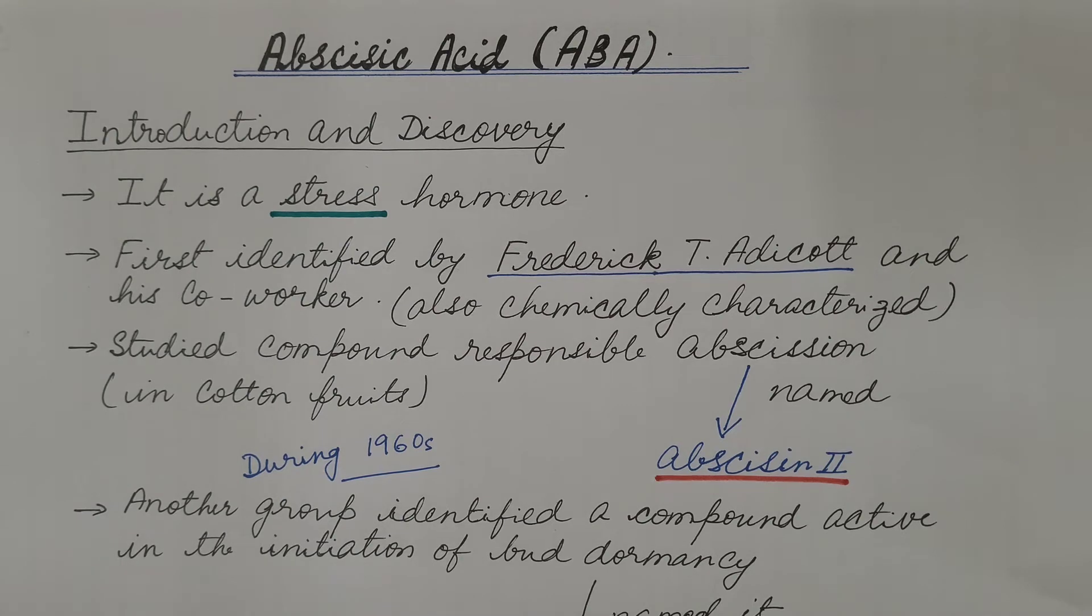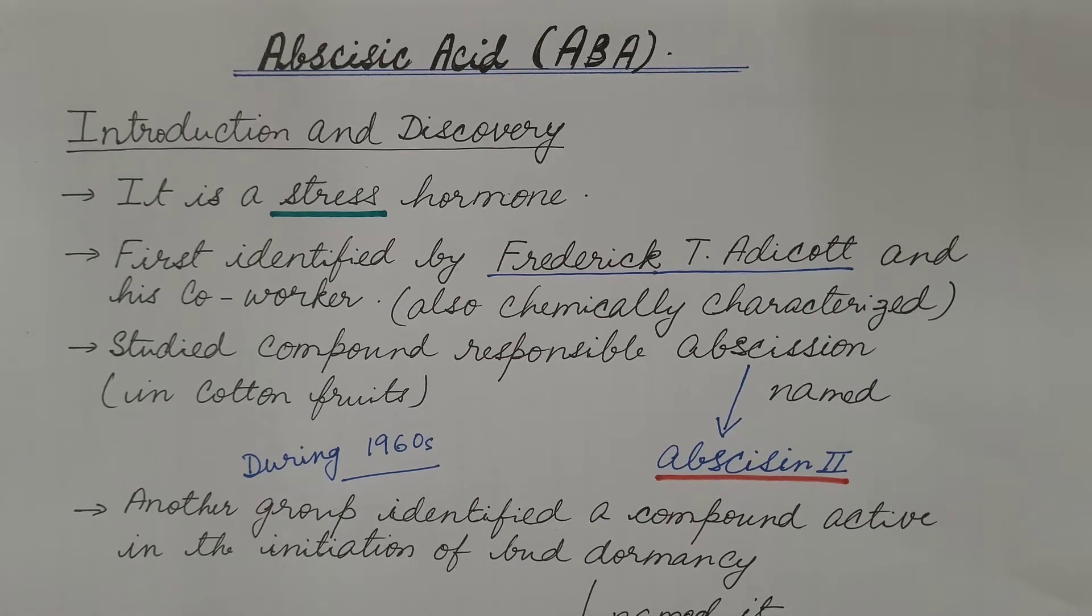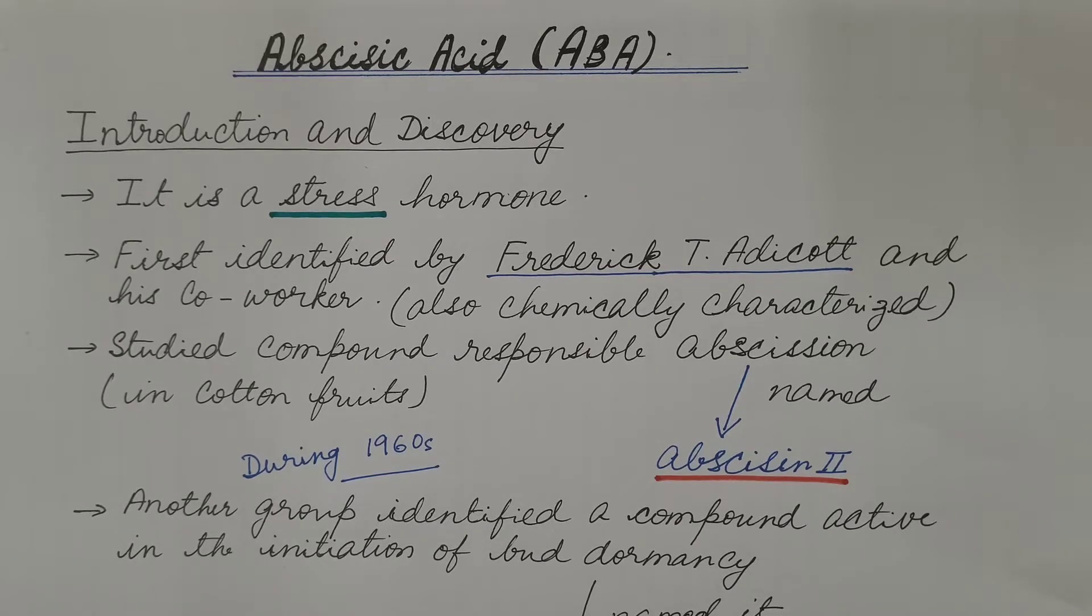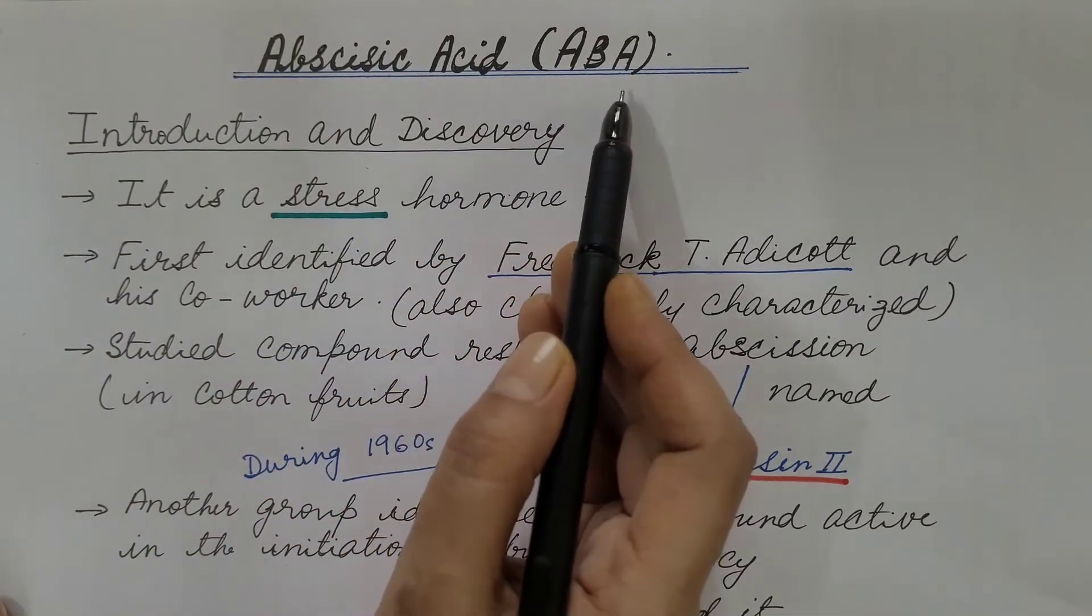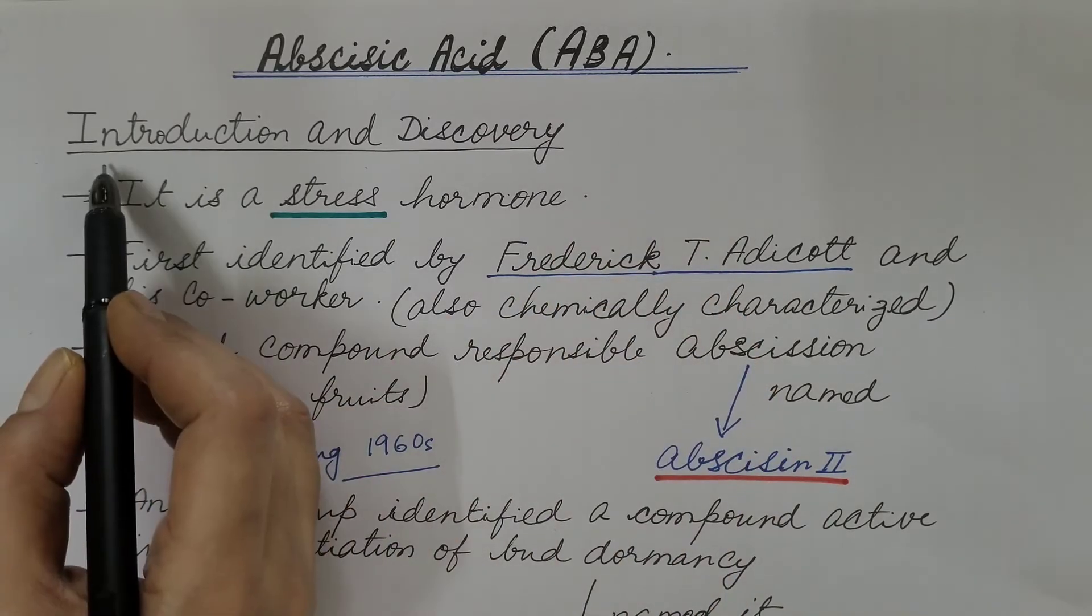Hello friends, in the last video we discussed about cytokinin plant hormone. You can refer to my video, the link is given in the description box. Today we are going to discuss about abscisic acid, in short ABA. So first of all, introduction and discovery.